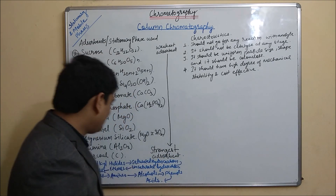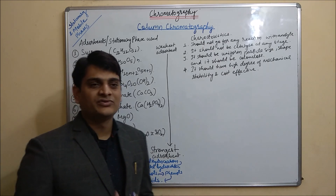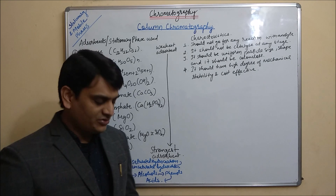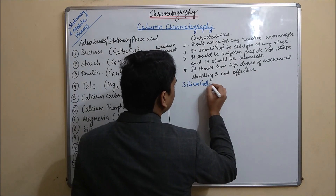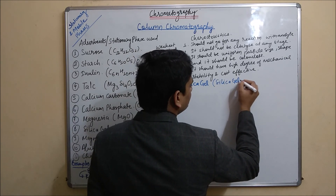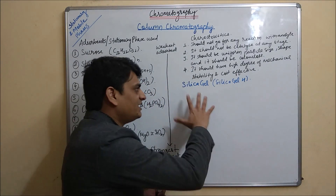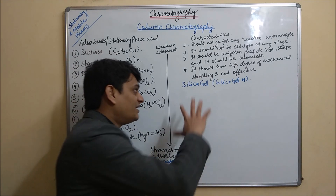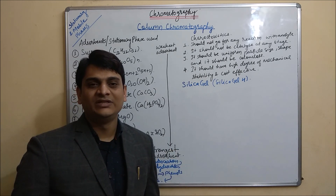Now coming to silica gel, which is the most commonly used adsorbent in column chromatography. Silica gel H is used for column chromatography purposes, and the particle size for silica gel H is between 125 microns to 250 microns.